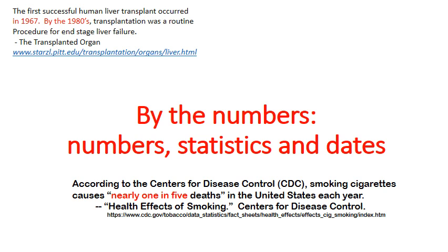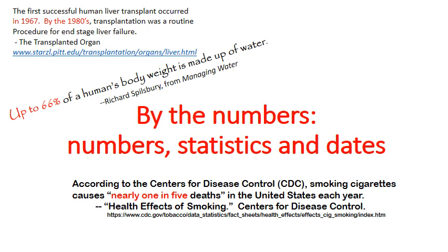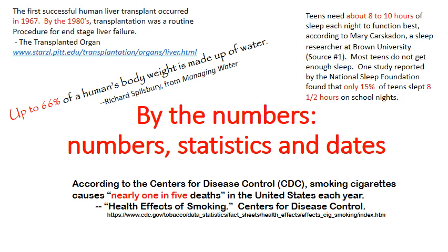Whether we realize it or not, people tend to view data as factual and accurate. Of course, it's important to use data from reliable sources and to represent it accurately — statistics can be easily manipulated. Mark Twain famously said there are three kinds of lies: lies, damned lies, and statistics. But when you use statistics accurately, they can add a lot of weight to your argument.